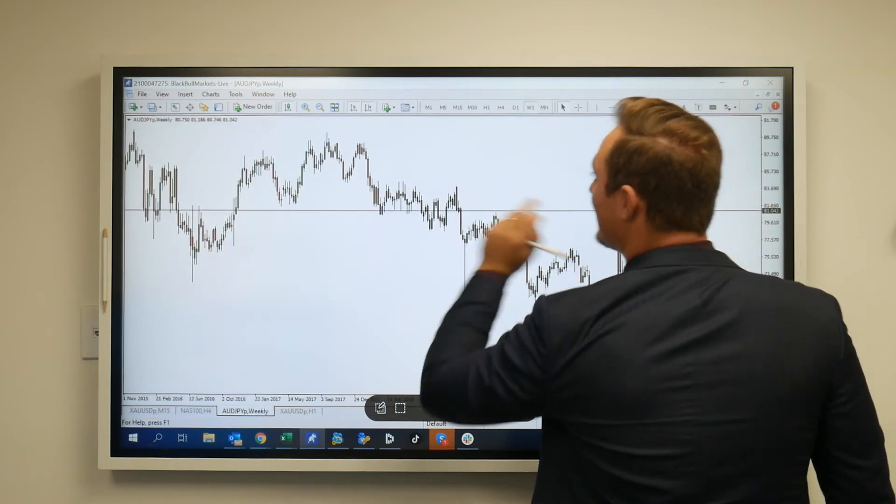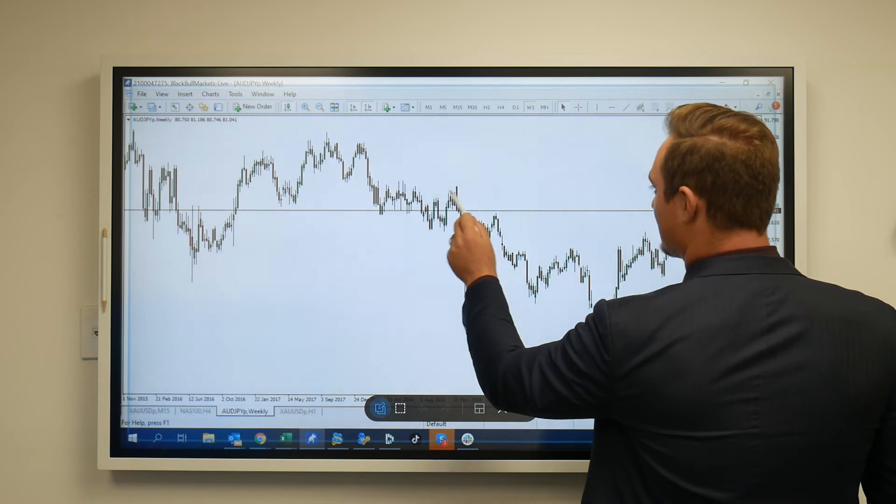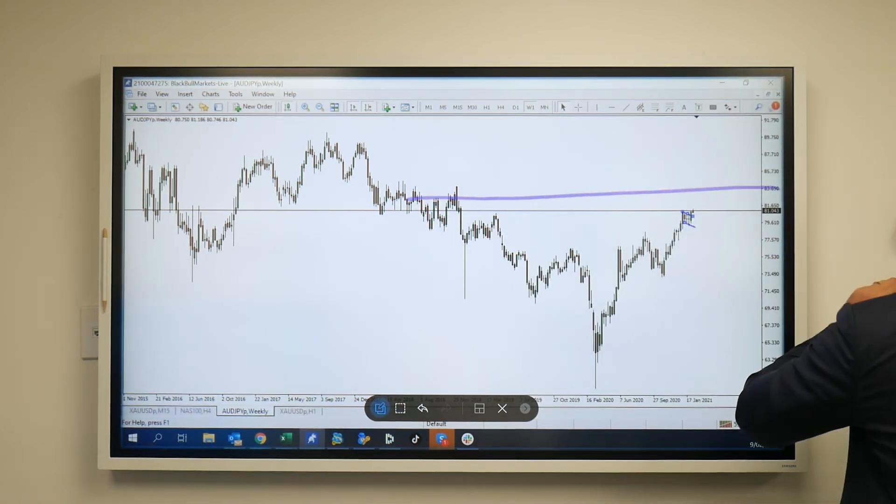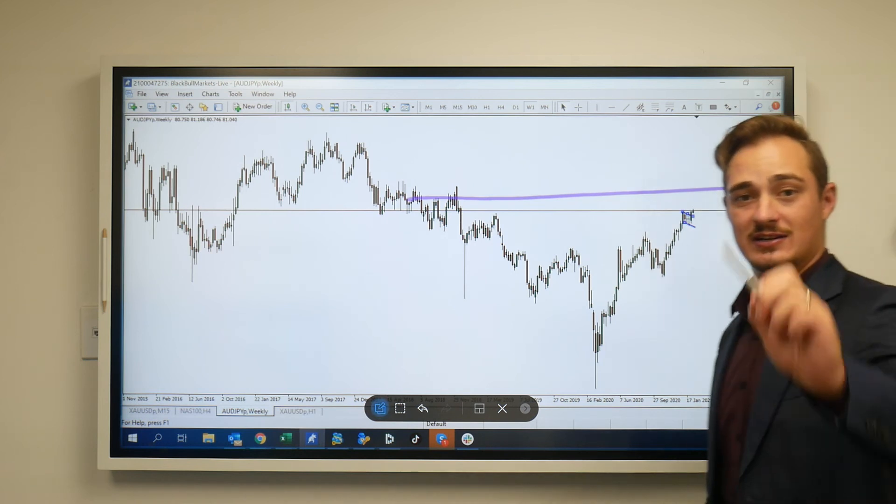Looking at the weekly timeframe, we can see there is a nice clear little target coming up, nice clean zone to the left, nice resistance coming up at 83.7, so nice psychological level.